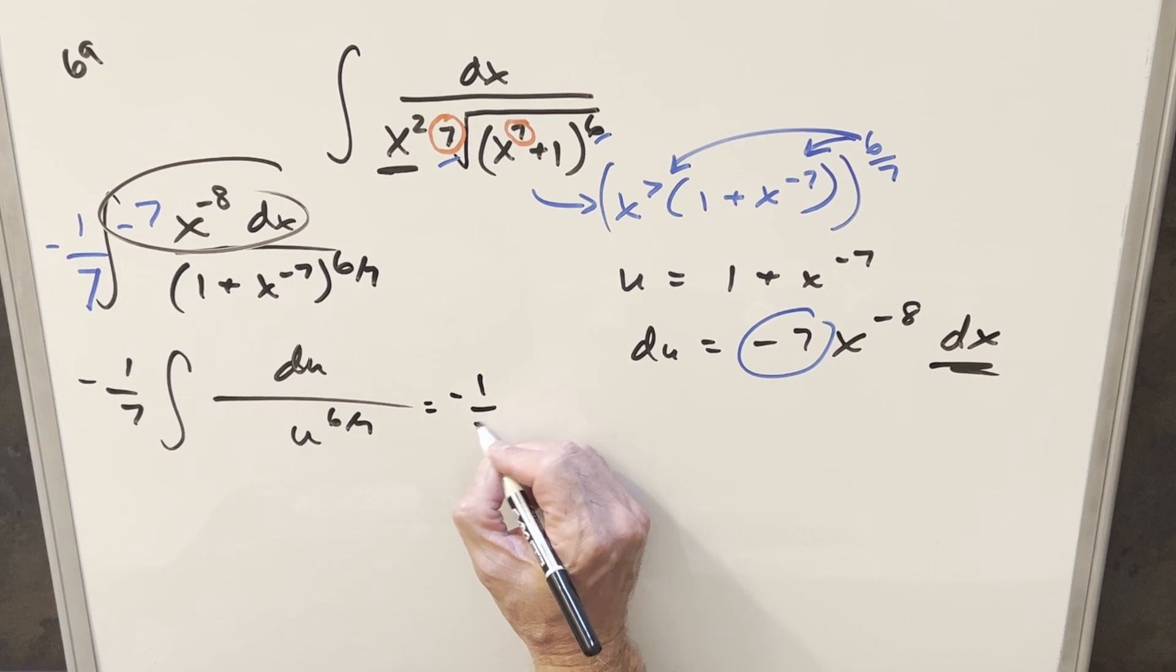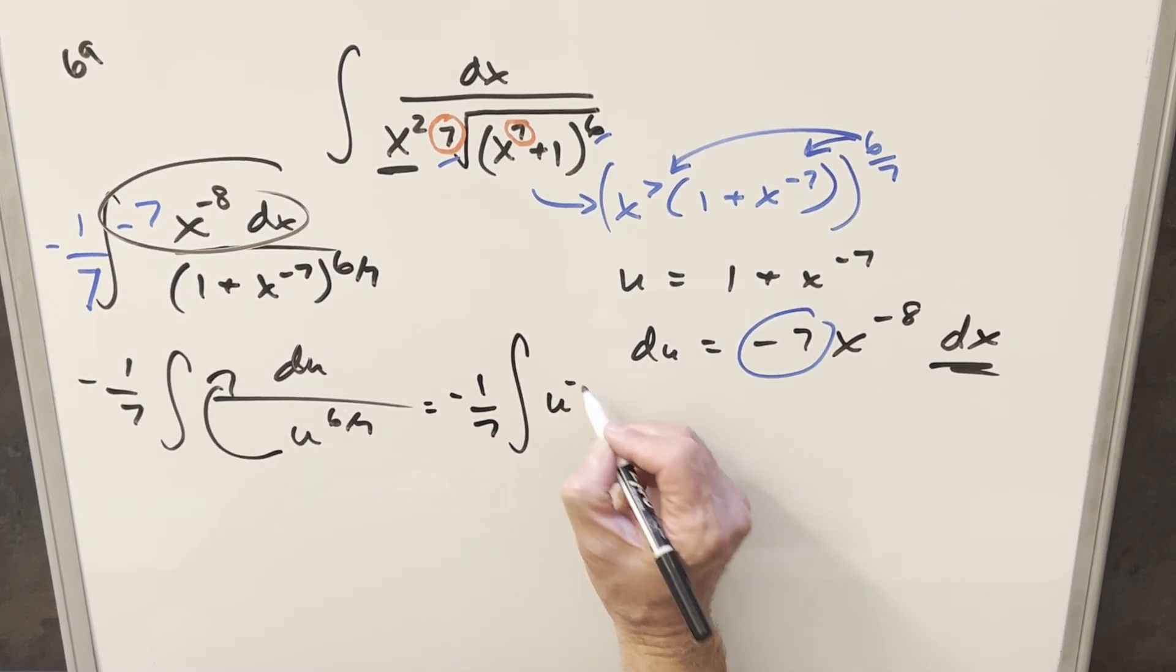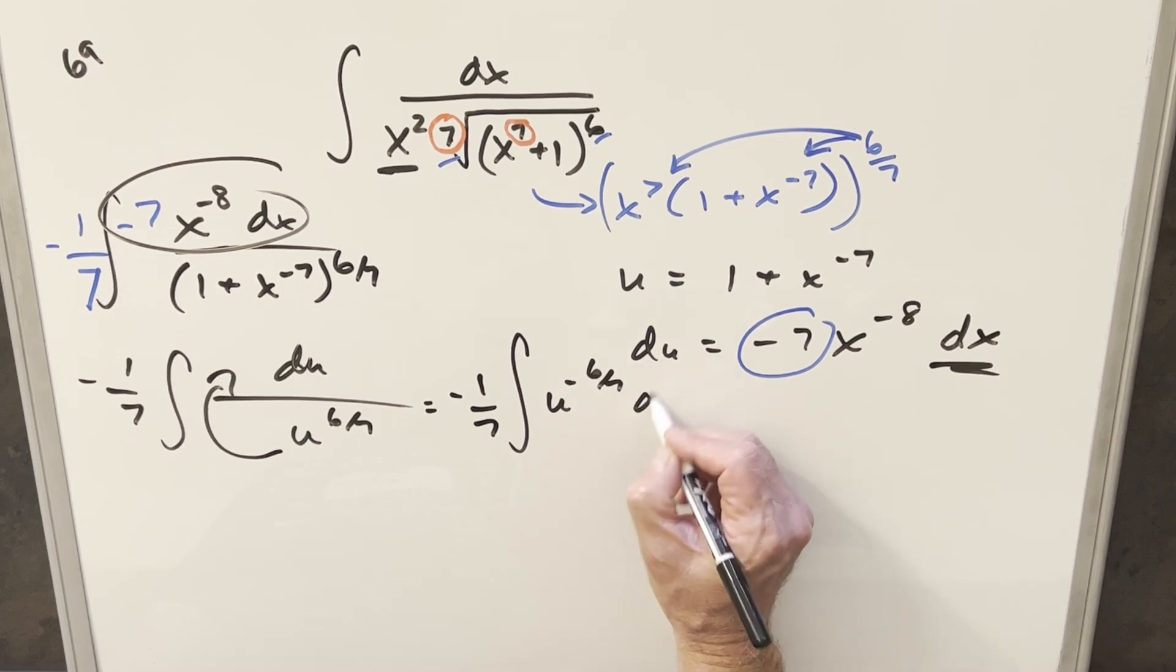Then let me rewrite it, because what I want to do is, now we can just use power rule on this, but let's bring this into the numerator. So let's have this as u to the minus 6 over 7 du.